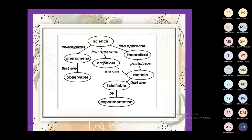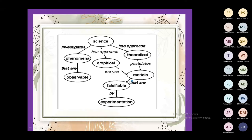The second example is a science concept map. Science has an empirical approach which derives models that are falsifiable by experimentation. If we correlate the word 'science' with 'experimentation,' without experiment we are unable to explain science. These things can easily be shown with the help of models or empirical formulas. Science also investigates phenomena that are observable. Science also has a theoretical approach — it postulates many theories correlated with models that are testable by experimentation.